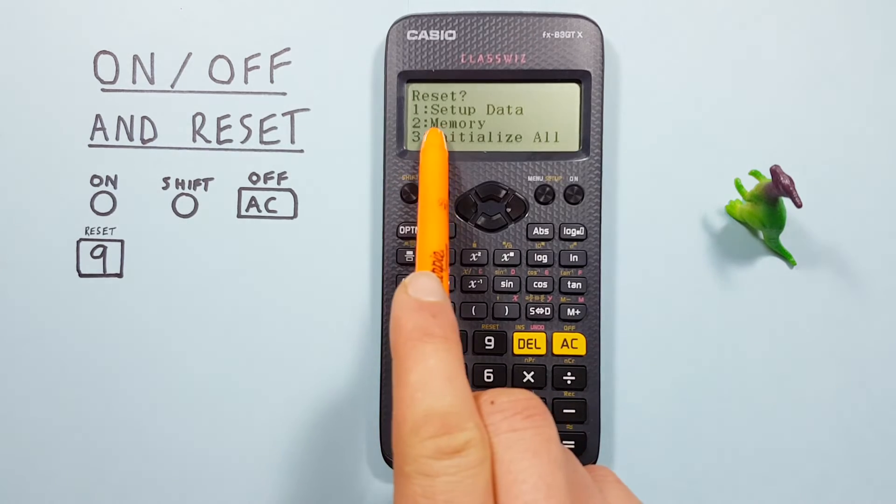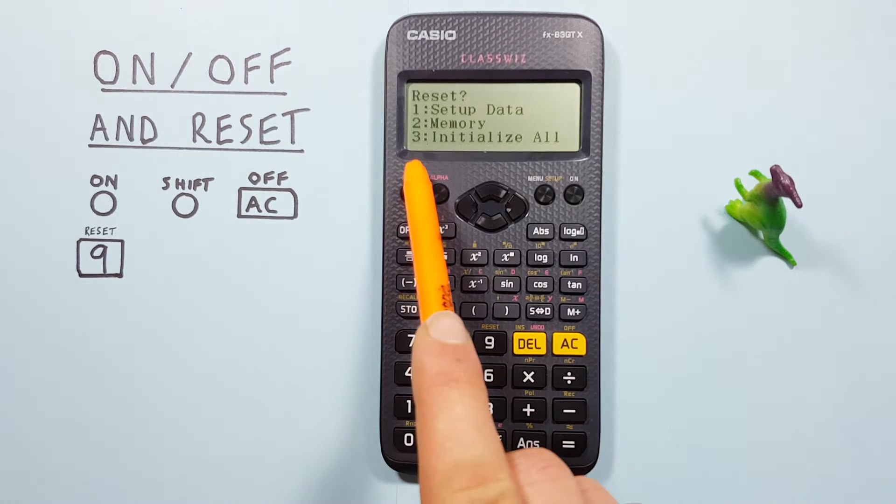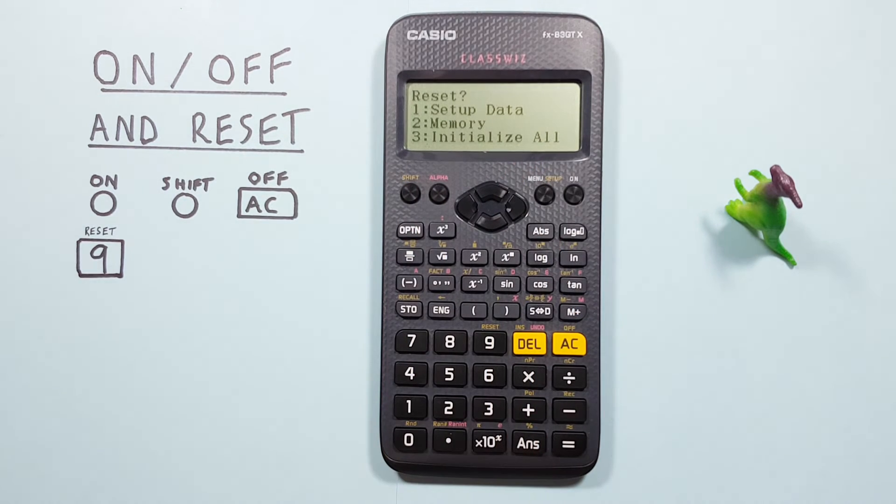Number 2 is the memory, so that'll be any stored variable you can clear or reset. Or number 3, initialize all, which does both - clears your setup data and your memory.